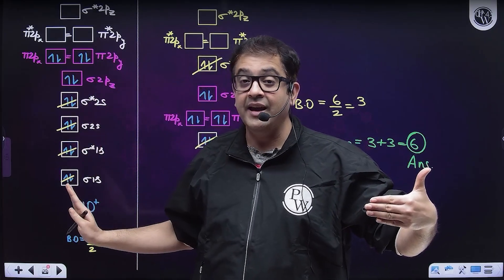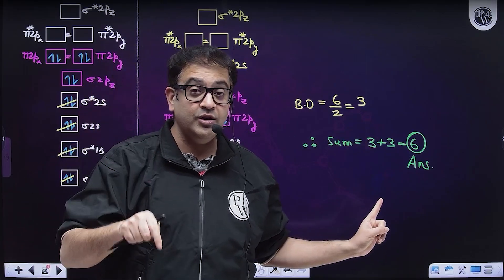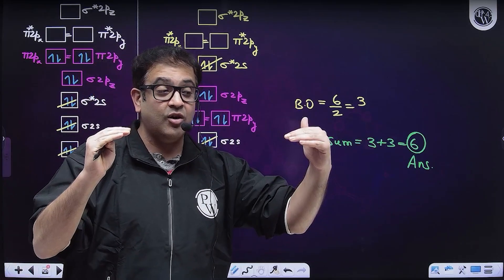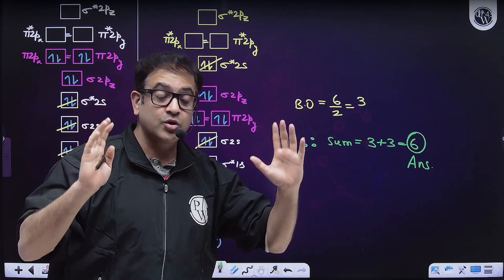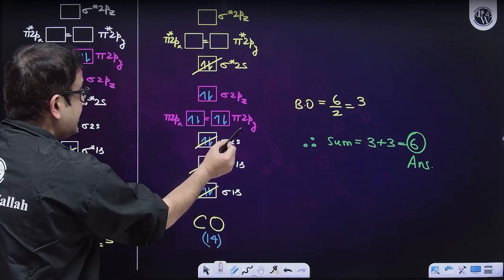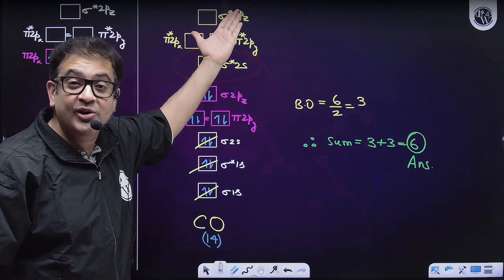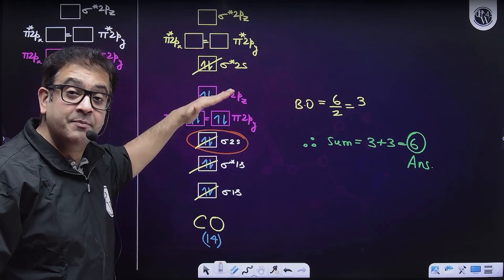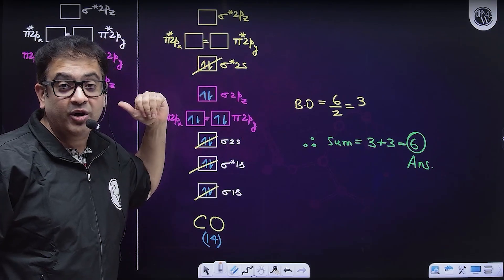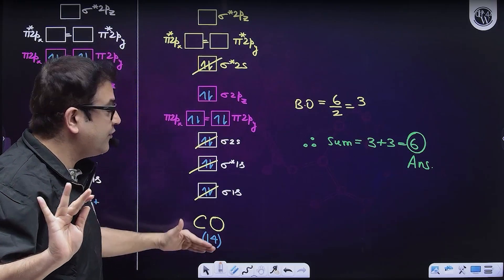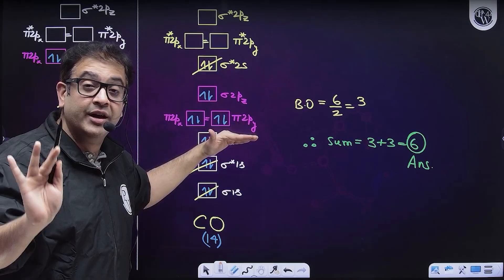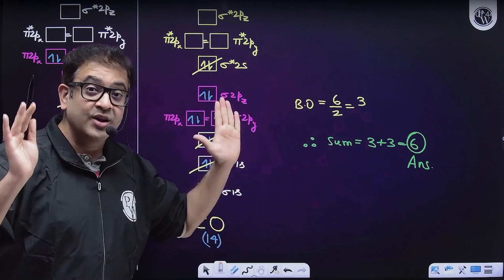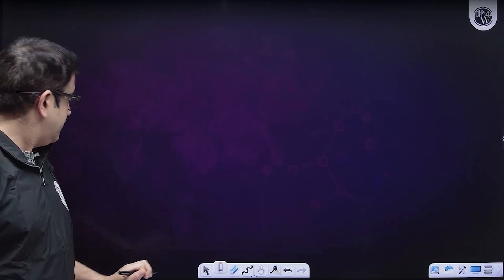For CO, number of electrons is 14, so we should follow MOT diagram for N2. But actually, what happens for CO especially is because carbon and oxygen have dissimilar energies of combining atomic orbitals. What change is proposed is actually the sigma anti-bonding molecular orbital becomes of higher energy, and after sigma 2s, pi 2Px, pi 2Py, and sigma 2Pz comes. If you just follow this rule that for 14 we will do electronic configuration of molecular orbital following nitrogen, then also you will get your bond order to be 3.